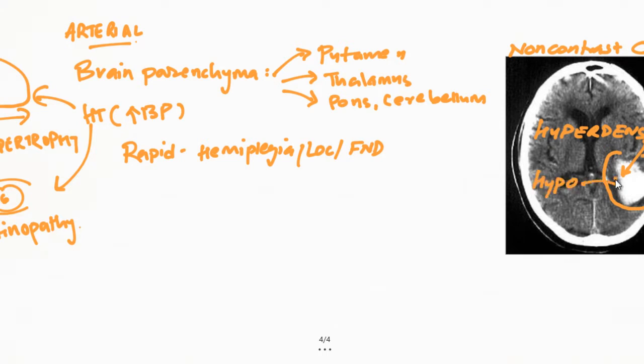But hemorrhagic area is usually hyperdense. You can see sometimes blood in ventricle region also, and this will cause pressure and mass effect.